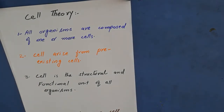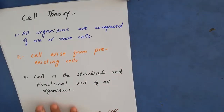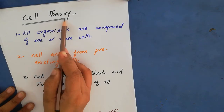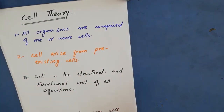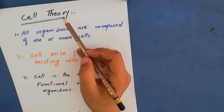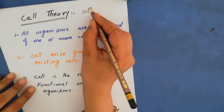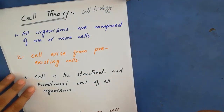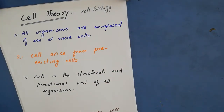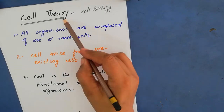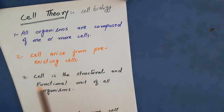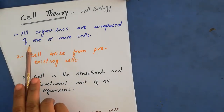Now let's learn about cell theory. Cell is the basic structural and functional unit of life. Cell theory is the most important part of cell biology — in fact, all cell biology depends upon it. We can call cell theory the backbone of cell biology. There are three most important postulates of cell theory.